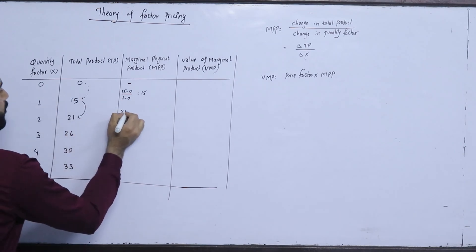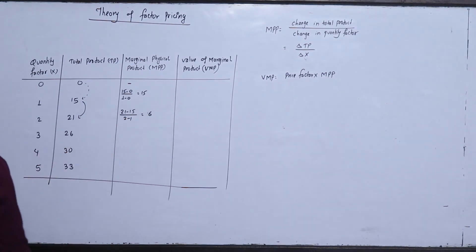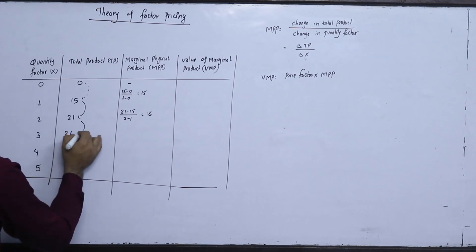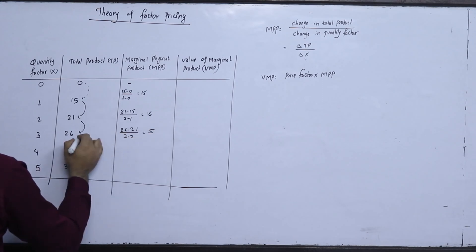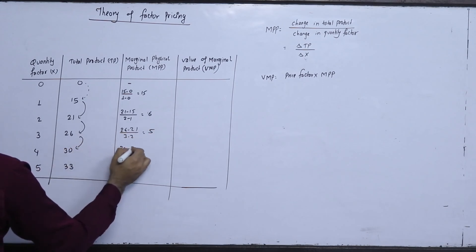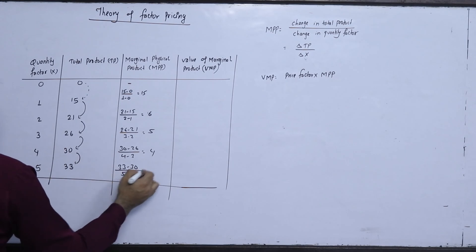Now this is 21 minus 15 divided by 2 minus 1. This is 6. So, another thing is here. 26 minus 21, 3 minus 2, 5. 30 minus 26, 4 minus 3, 4. 33 minus 30 divided by 5 minus 4, 3.